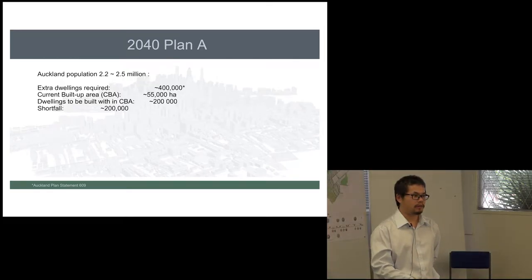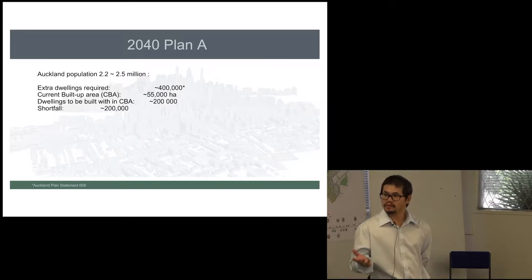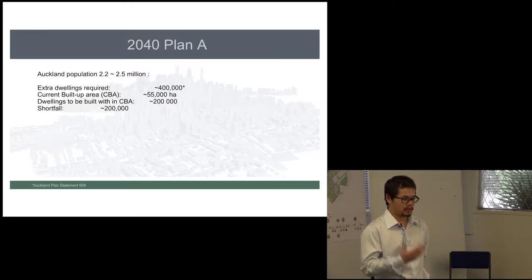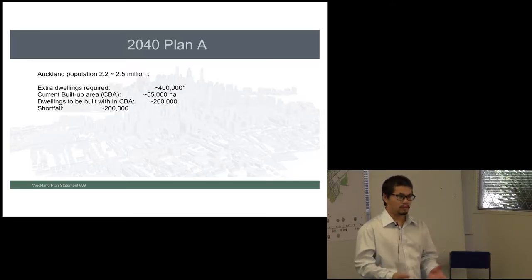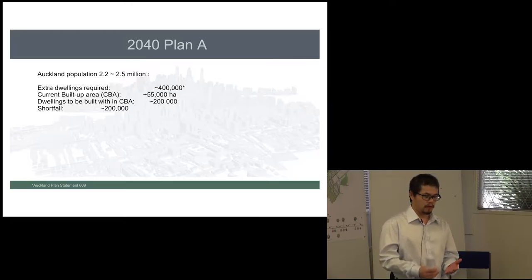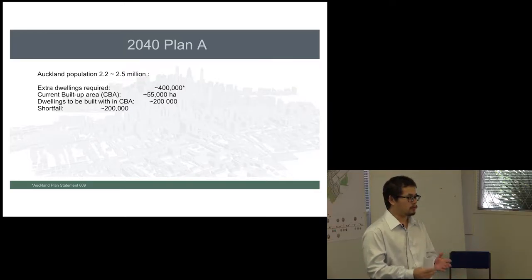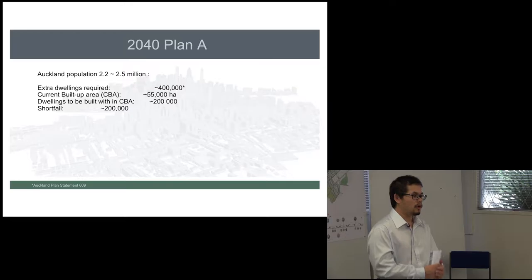In the current Auckland plan, they predict there's a 400,000 dwelling shortage. What they're planning to do is use a compact city approach to curb this problem by rezoning the existing land in the urban settlement for the development of about 200,000 dwellings, with about a 200,000 shortfall to develop within the metro urban limit.